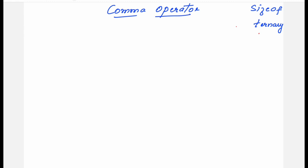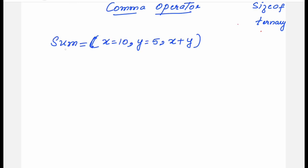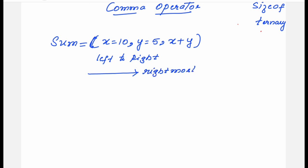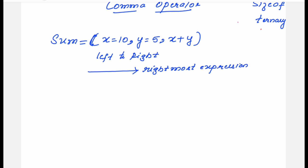The comma operator can be used to link related expressions together. Normally when writing a statement like sum = (x=10, y=5, x+y), the comma operator is evaluated from left to right — that is the associativity for the comma operator. All expressions are evaluated from left to right, and the value of the rightmost expression is the value for the combined expression.